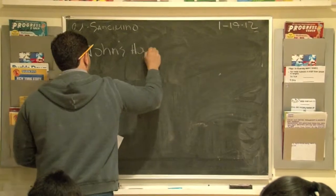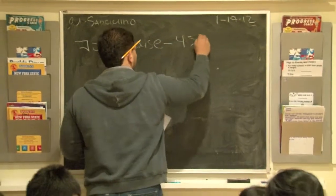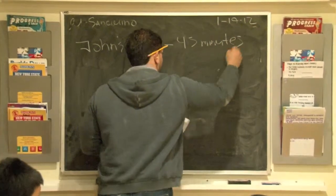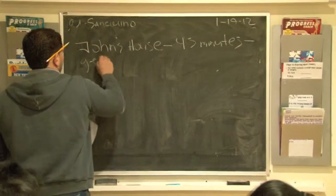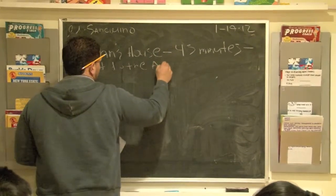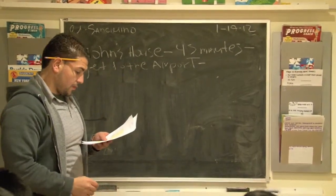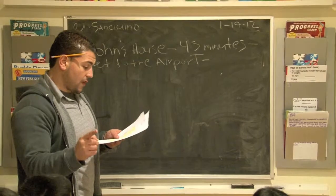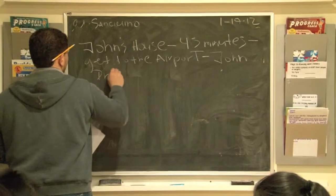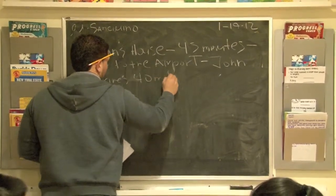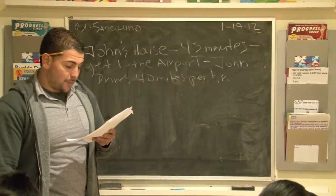It takes John about 45 minutes to get to the airport. So 45 minutes to get to the airport. Now it says John drives 40 miles per hour. Okay, John drives 40 miles per hour.